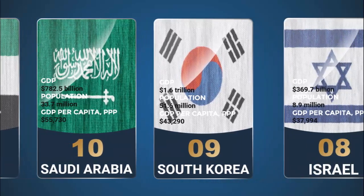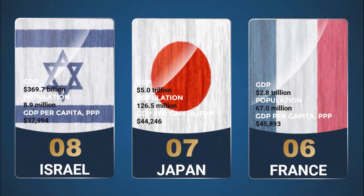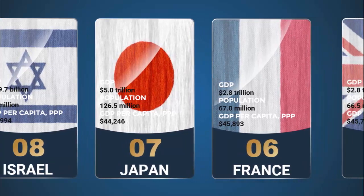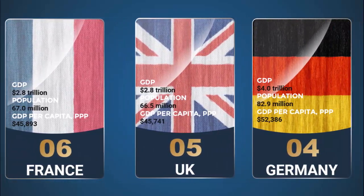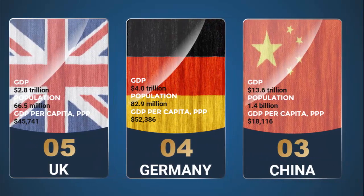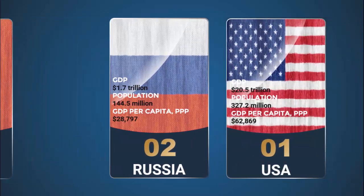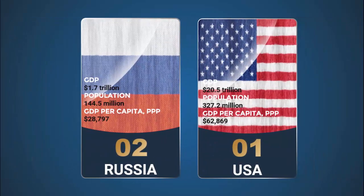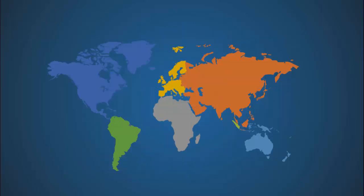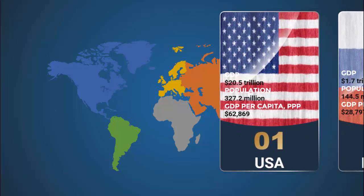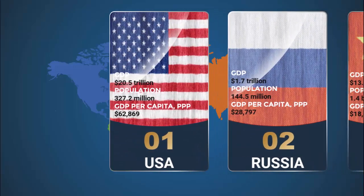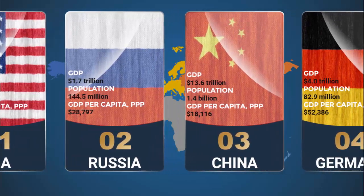For each country, I've provided the flag, the GDP, the population, and the per capita income. You can see the top five includes the UK, Germany, and China, and the last top two countries are Russia and the USA. I've also created one more slide with an animation effect — the previous one was a transition effect — and this animation effect scrolls starting from number one, the USA.